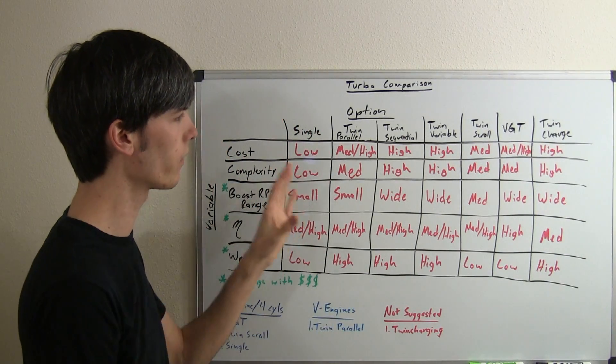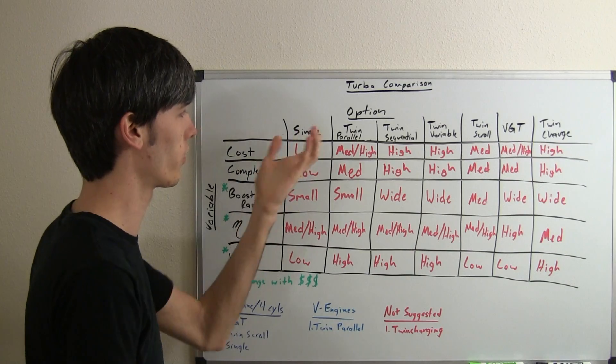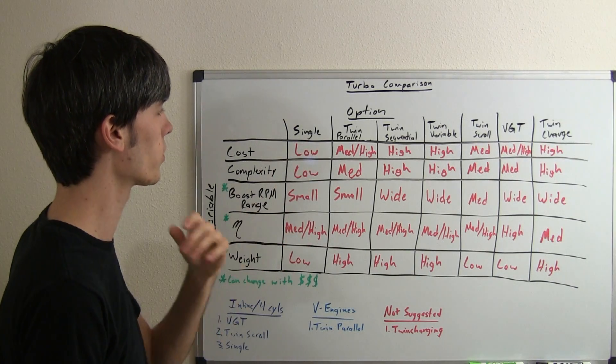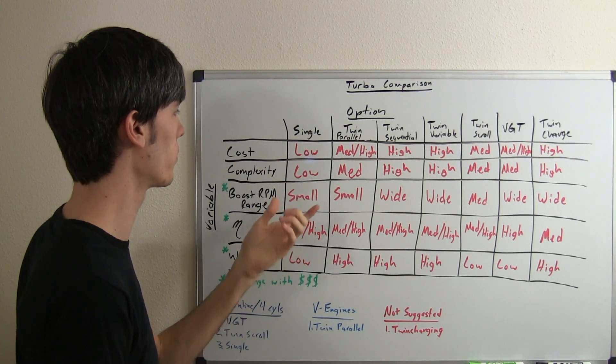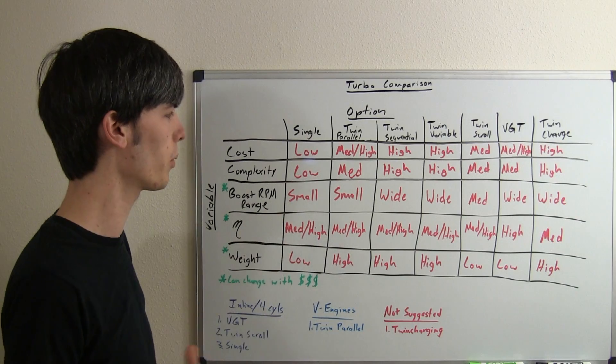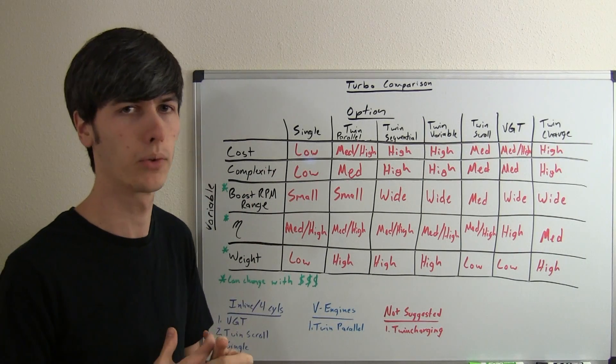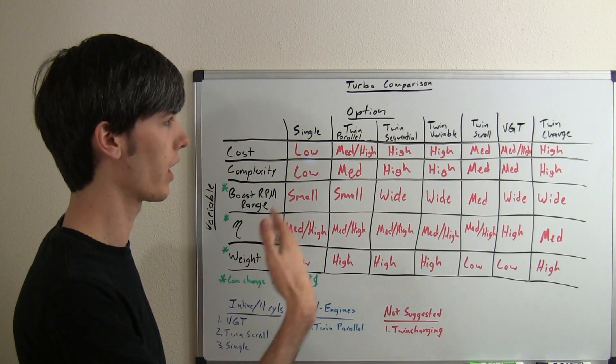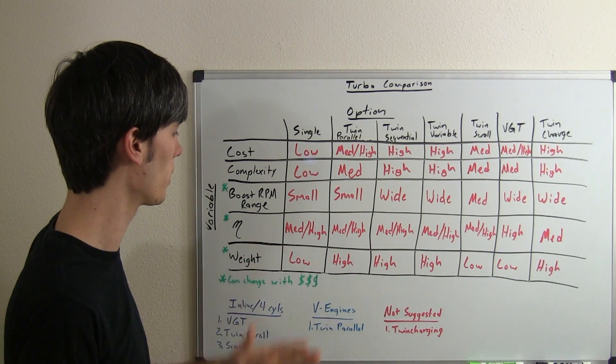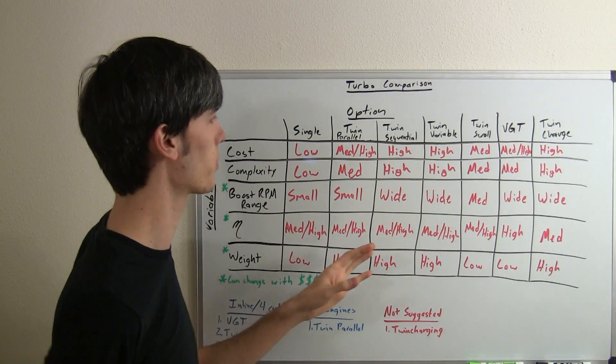So, we'll start with single. And all of these comparisons are relative to each other. So if it says low, that doesn't necessarily mean that the cost of a single turbocharger is low, it just means relative to these other options that the cost is low. So single turbocharger: fairly cheap compared to the other options, fairly simple, so you're going to have the reliability because it's not as complicated as these other systems. Boost RPM range, this is where it suffers. It's going to have a more narrow range of where you're going to have that boost. Typically it's going to be in the higher RPMs so that you can have power at higher RPM and then better efficiency at low RPM. Efficiency of the system: medium to high for the system in general. And then the weight compared to these other options is going to be low.